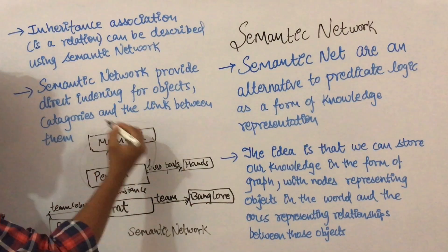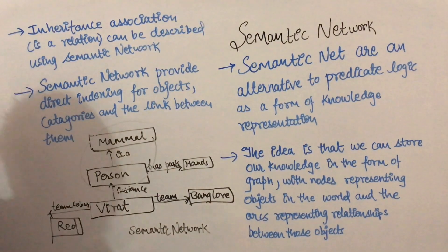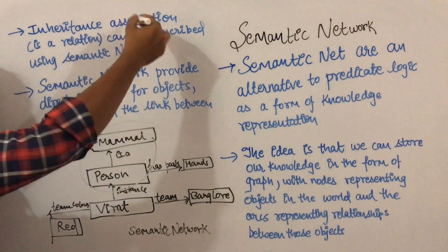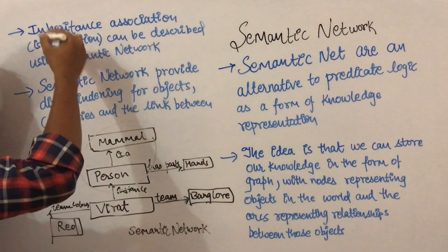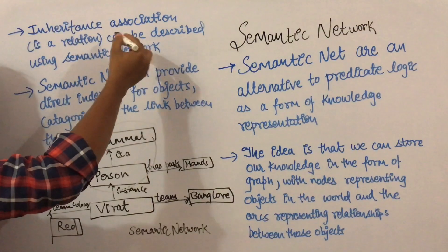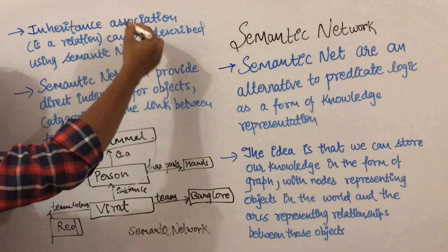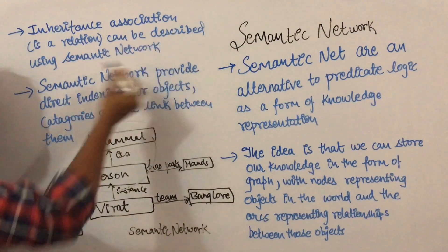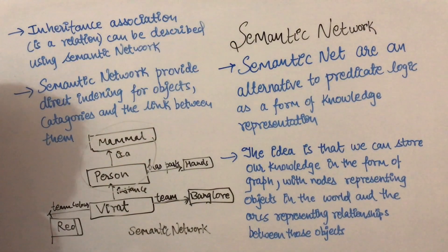This is an inheritance relationship — person is a mammal. Inheritance and association are relationships that can be described using a semantic network.